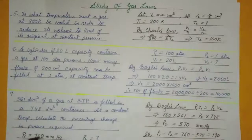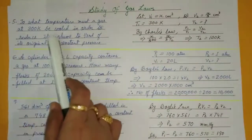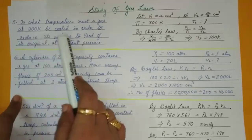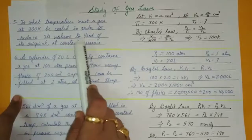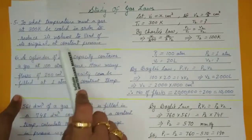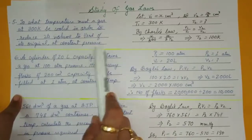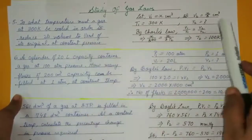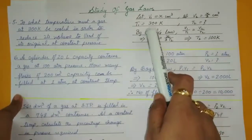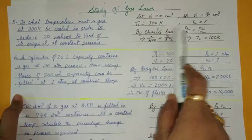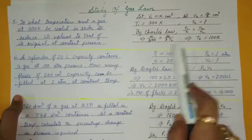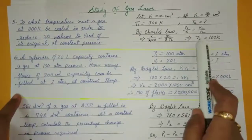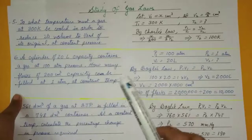Question 5: At what temperature must a gas at 300 K be cooled in order to reduce its volume to one third of its original volume at constant pressure? By Charles' law: let V₁ = x, V₂ = x/3. T₁ = 300 K (already in Kelvin, no conversion needed). Find T₂ using V₁/T₁ = V₂/T₂. A class 9 student can solve this easily — only the explanation of the question was needed.